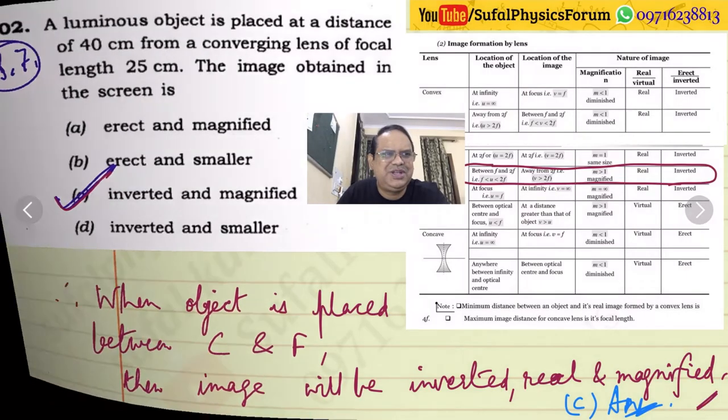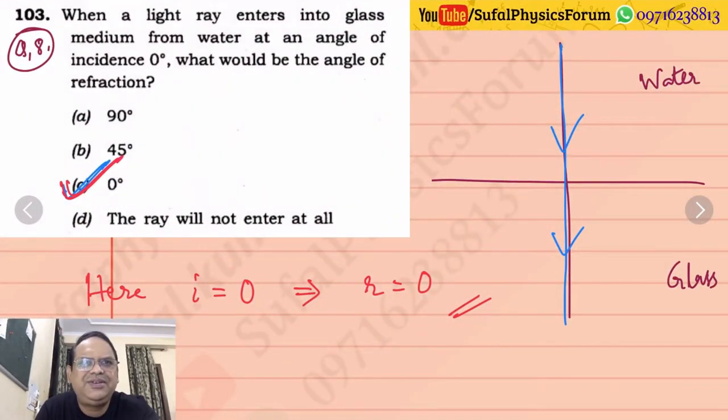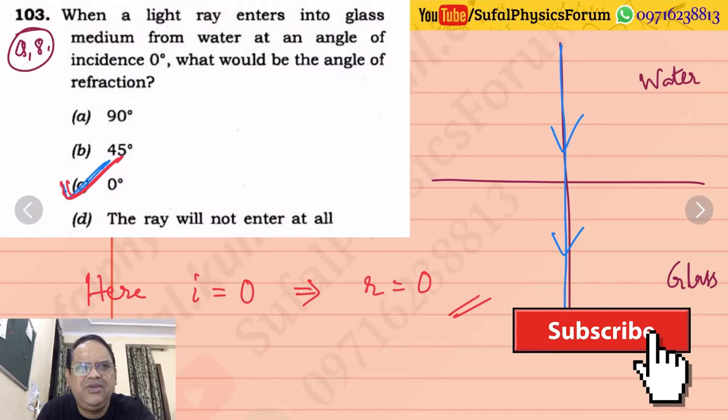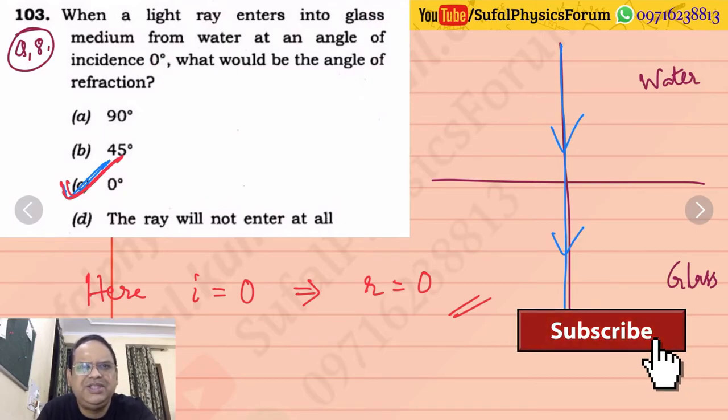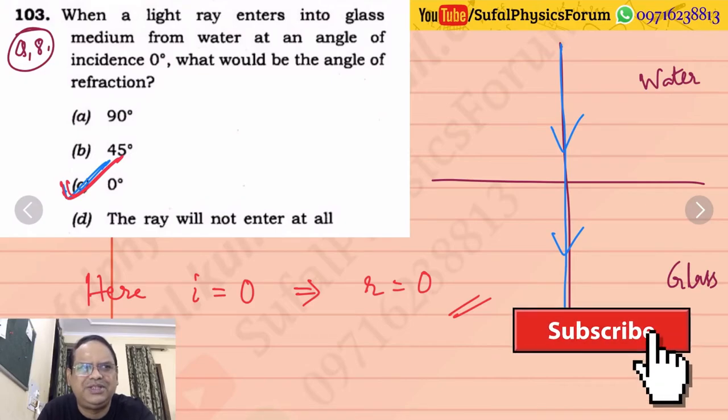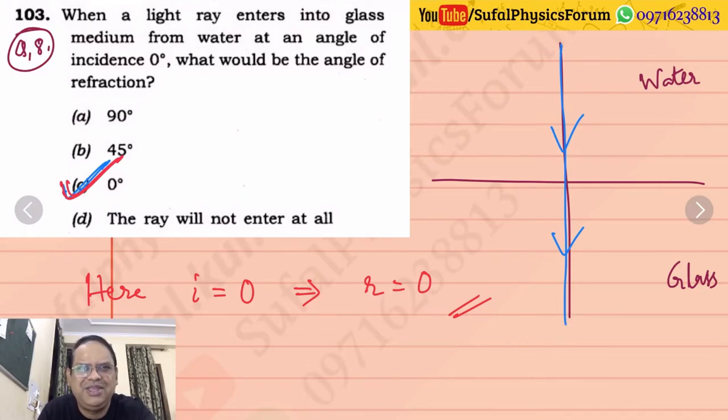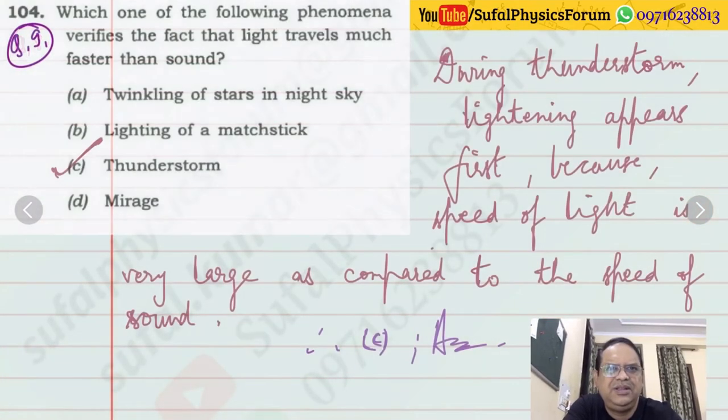Question number 8: When a light ray enters into glass medium from water at an angle of incidence 0 degree, what would be the angle of refraction? If angle of incidence is 0 degree, meaning the incident ray is traveling along the normal, in such cases the refracted ray also continues its motion in the same direction. Angle of refraction will also be 0 degree.